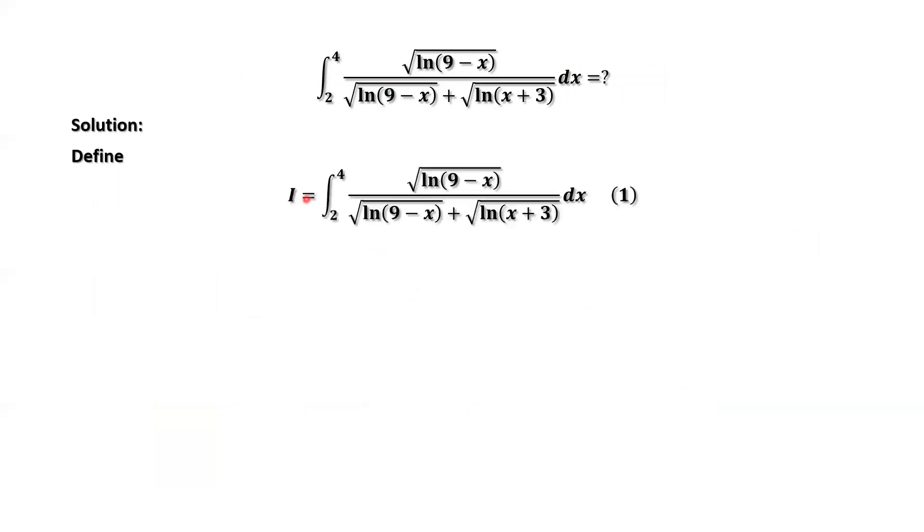We use I for this integral, marked as equation 1. The x range is from 2 to 4. This implies 9 minus x is from 7 to 5, and x plus 3 is from 5 to 7.